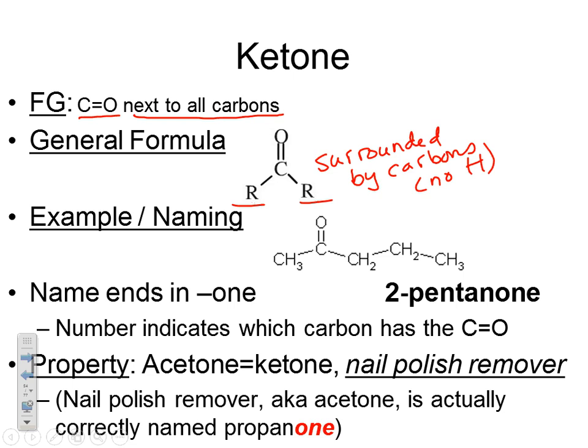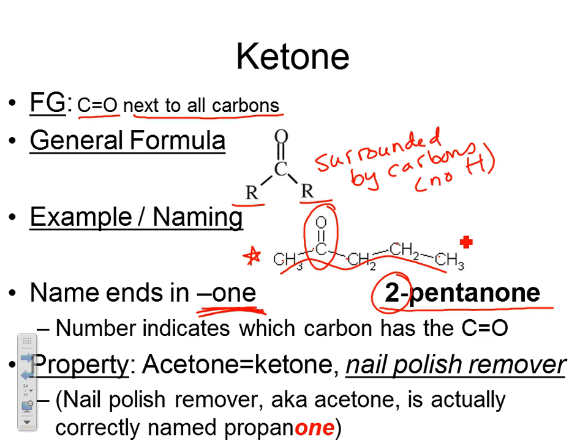For naming ketones, we keep our carbon prefixes but use the ending -one (O-N-E). Because the C=O is in the middle of the chain, you do need numbers to indicate which carbon has the double-bonded oxygen. For example, 2-pentanone: pent- because there are 5 carbons total, -one because of the C=O in the chain, and 2 because the C=O is on the second carbon.